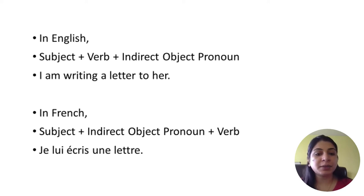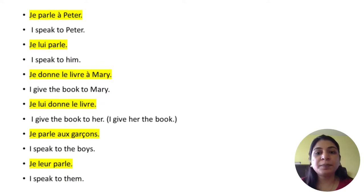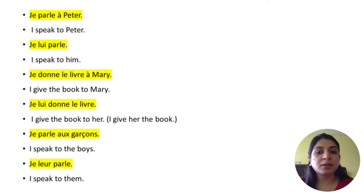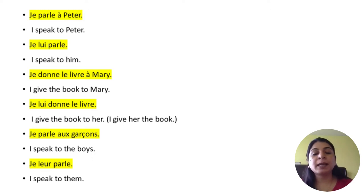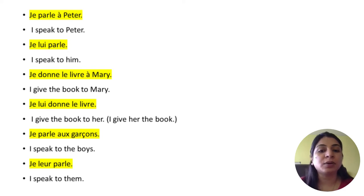Let's see more examples. 'I speak to Peter' — 'Je lui parle', because we say 'I speak to him'. 'Je donne le livre à Marie' — I give the book to Marie. In French 'to' is expressed with 'à' (a with an accent). So it becomes 'Je lui donne le livre' — I give the book to her.